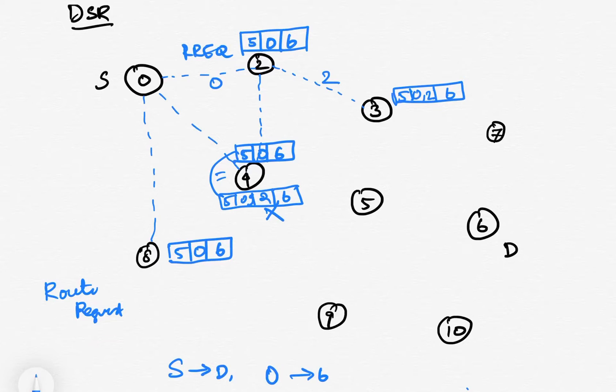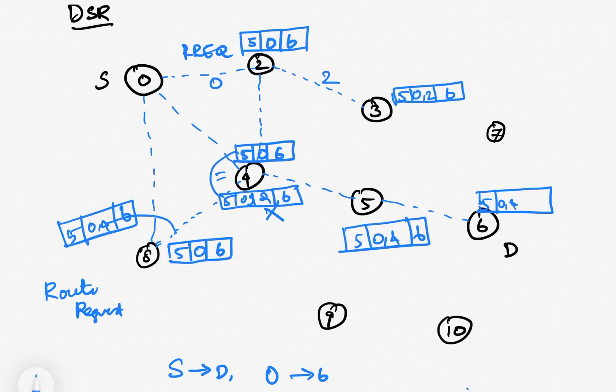Node 4 will send packets to node 5 and node 8. The packet will have ID 5, path 0, 4, 6. When node 6 receives this packet matching the destination, route number 1 is ready.